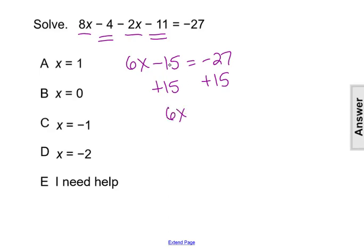So 6x will then equal negative 12. And then we'll divide both sides by 6 to get that x equals negative 2.